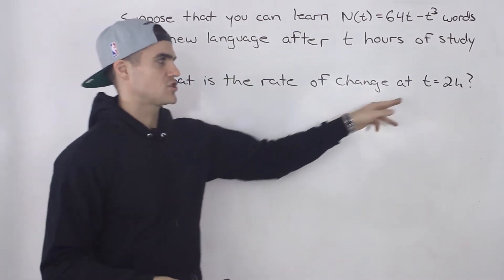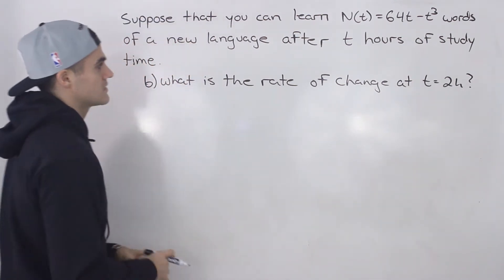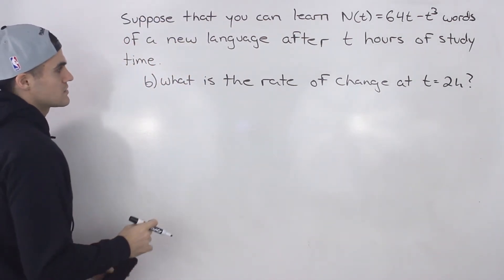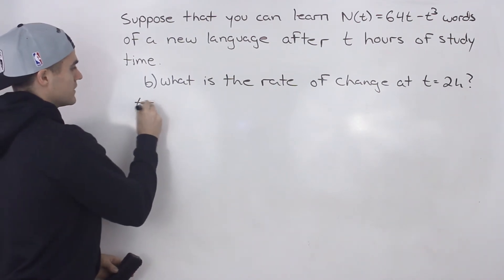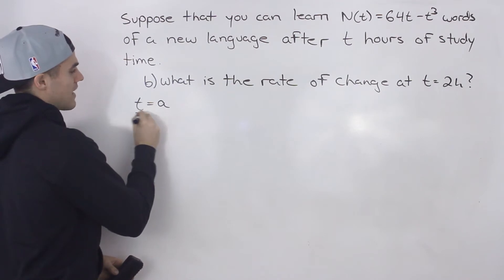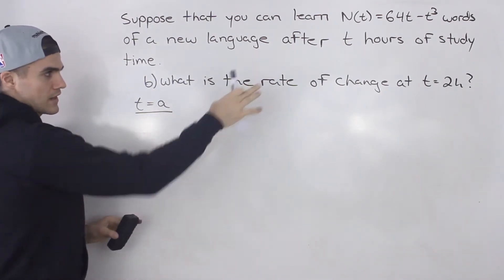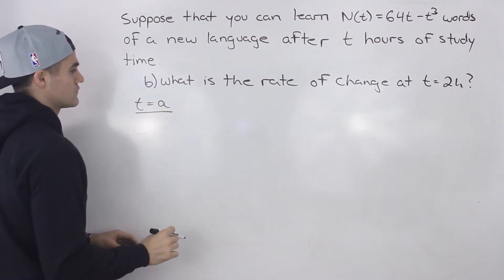Because they're asking for the rate of change at a specific point in time, you're asking for the instantaneous rate of change. So to start this off, let's just find what the general instantaneous rate of change would be for a t value of A. So once we have that expression, we can then plug in a t value of two.